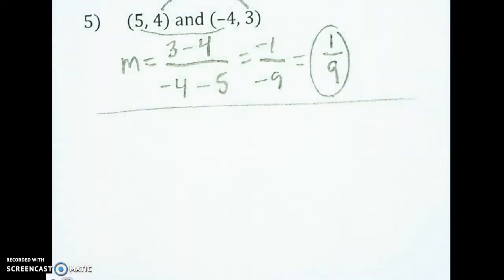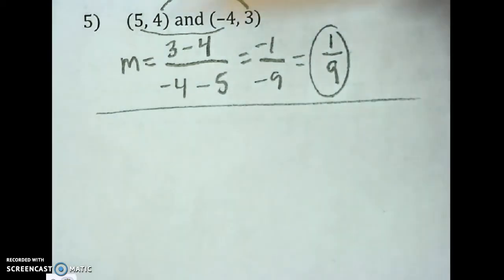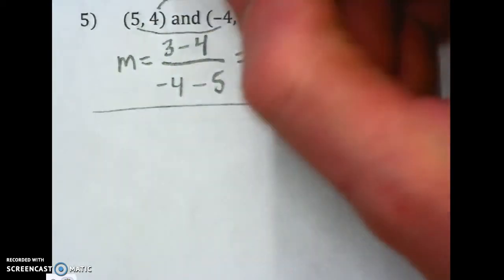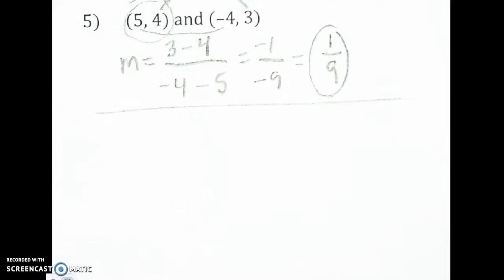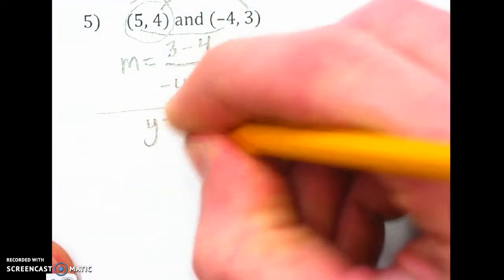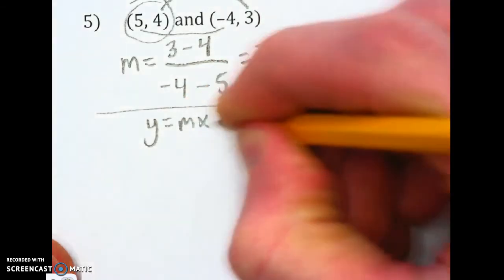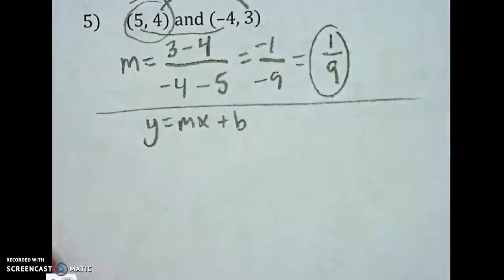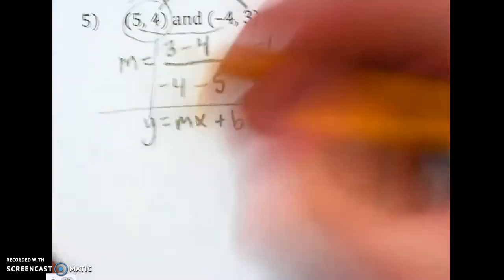Okay, second part. We need to pick one of these points. I'm going to pick a point right here that has both positives on it and plug them into y equals mx plus b. So plugging that in, the y value is 4